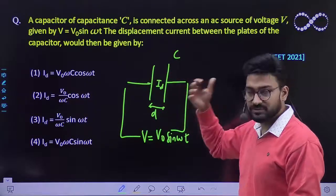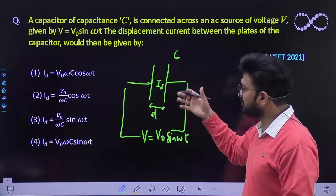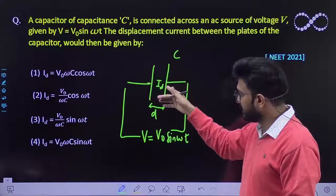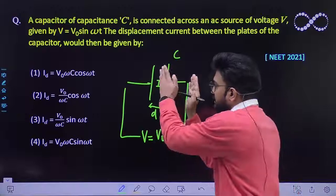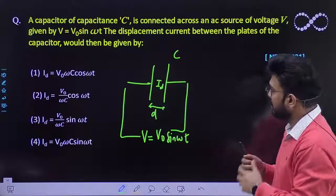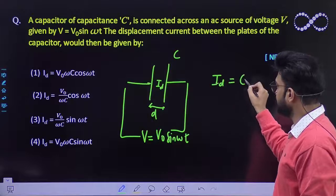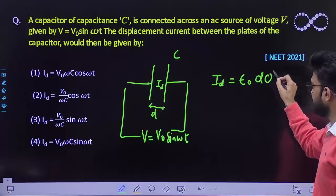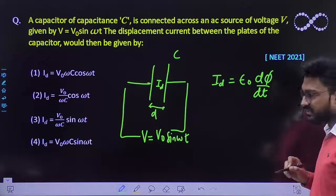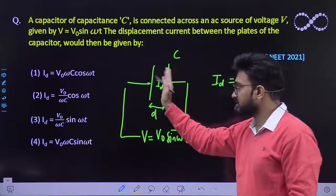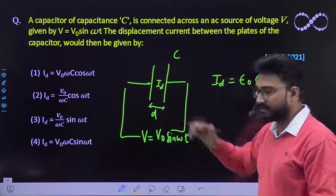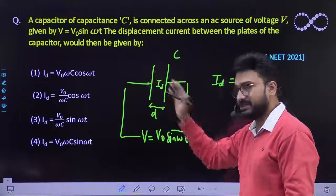The displacement current is because of the fluctuation of electric field, because of which we'll be getting displacement current within the two parallel plates capacitor. And it is given by the relationship ID = ε0 dφ/dt, where φ is the flux changing through this parallel plate capacitor between these parallel plates.